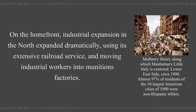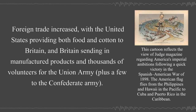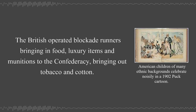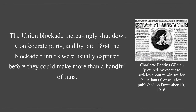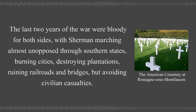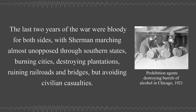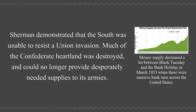On the home front, industrial expansion in the North expanded dramatically, using its extensive railroad service and moving industrial workers into munitions factories. Foreign trade increased, with the United States providing both food and cotton to Britain, and Britain sending manufactured products and thousands of volunteers for the Union Army, plus a few to the Confederate Army. The British operated blockade runners bringing in food, luxury items, and munitions to the Confederacy, bringing out tobacco and cotton. The Union blockade increasingly shut down Confederate ports, and by late 1864 the blockade runners were usually captured before they could make more than a handful of runs. The last two years of the war were bloody for both sides, with Sherman marching almost unopposed through southern states, burning cities, destroying plantations, ruining railroads and bridges, but avoiding civilian casualties. Sherman demonstrated that the South was unable to resist a Union invasion, and much of the Confederate heartland was destroyed and could no longer provide desperately needed supplies to its armies.